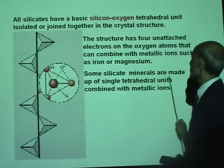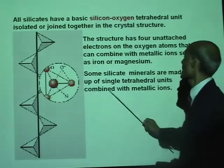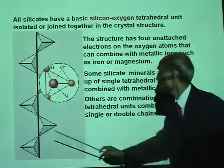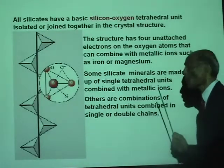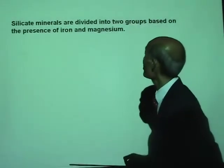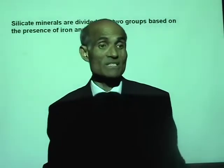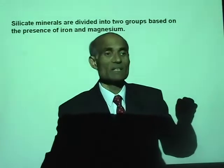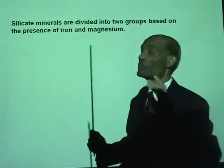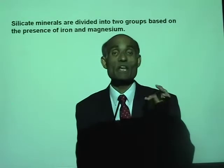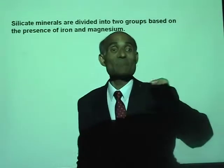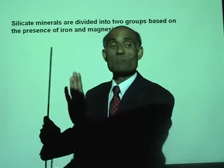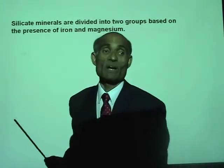One of the important characteristics of silicates is that they easily combine with iron and magnesium, forming compounds. Some silicate minerals are made of single tetrahedron units combined with metallic ions, and others are combinations of tetrahedron units in single or double chains. Silicate minerals are divided into two groups depending on whether these minerals contain iron and magnesium. If iron and magnesium are present, we put them in one group; if not, we put them in another group.